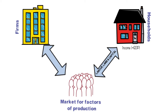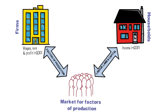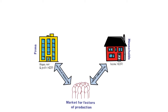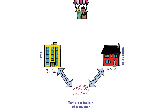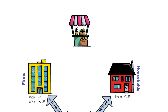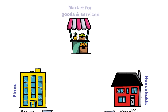Looking at it from the other perspective, we have firms who dip into this market looking for factors of production — land, labor, and capital. They will pay the going rate in the market, be that wages, rent, and profits. If you add up this income level, you generate a GDP measure as well.